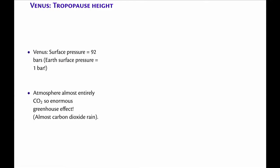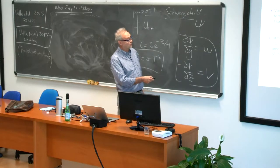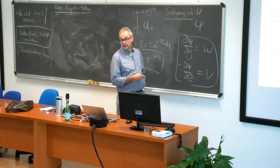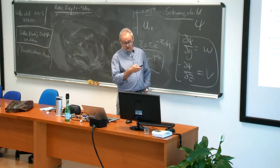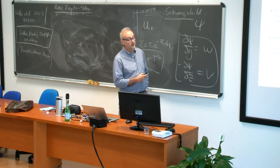The surface temperature is about 700 degrees Kelvin, which is above the saturation vapor pressure. But if carbon dioxide were not such a greenhouse gas and the temperature were cooler, some of the carbon dioxide would condense out and you would get rain. The surface pressure is 92 bars — an enormous greenhouse effect — so we expect the tropopause to be higher by our previous arguments.